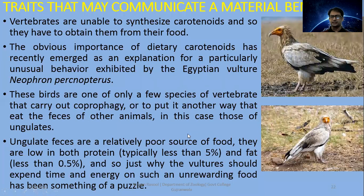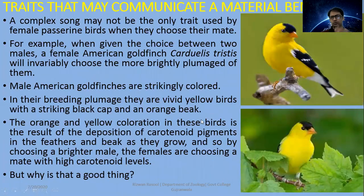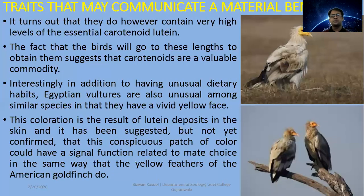The Egyptian vulture feeds on animal feces. These are poor food sources — low in both protein as well as fats. But if they feed on these, there is some reason or cause behind it. They have preferred and chosen this food. So when the root causes were investigated, it was found to relate to bright coloration in golden finches and the bright-colored beak.